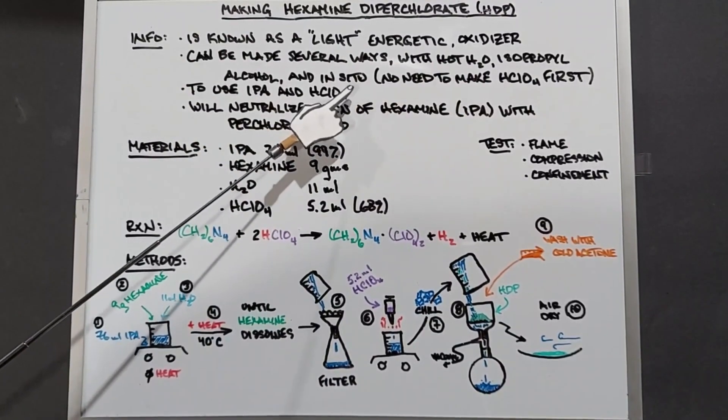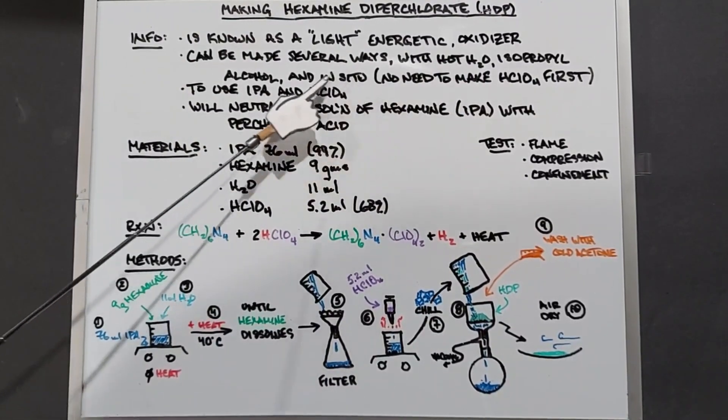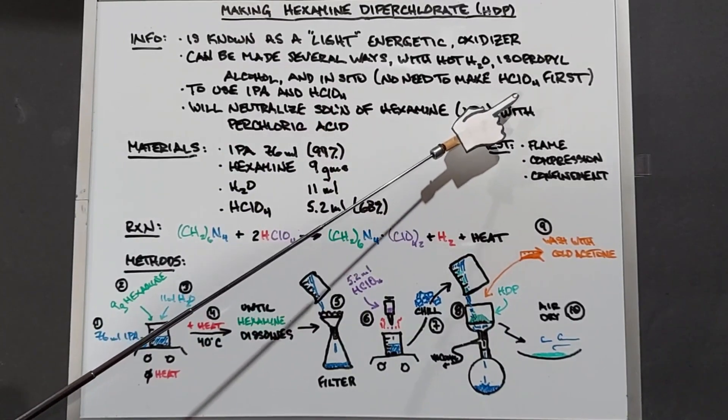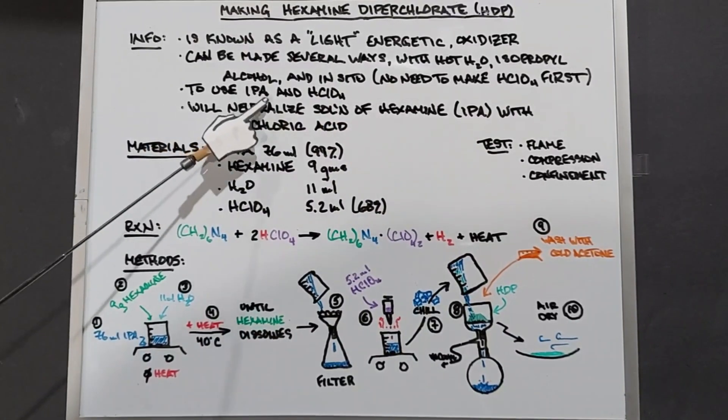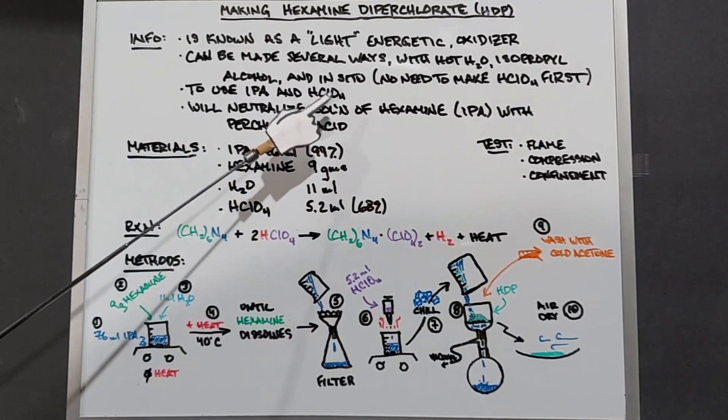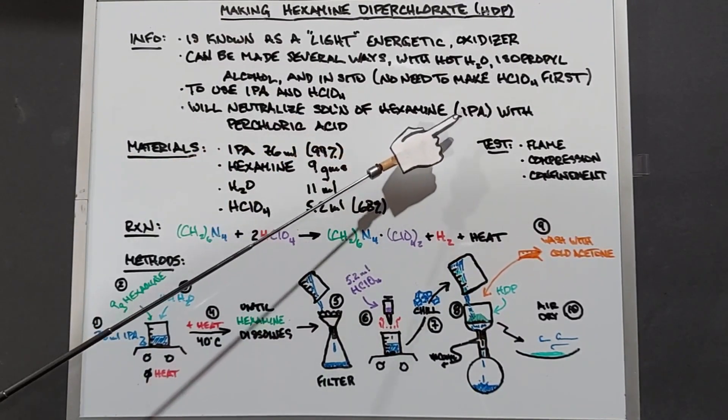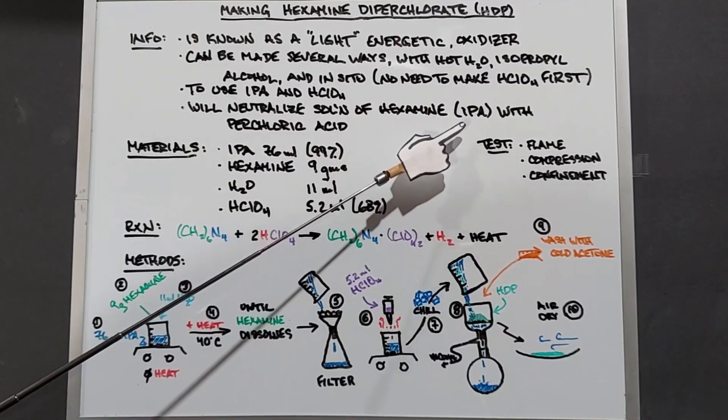What it means by in situ is that we do not need to make the perchloric acid first. This video I'm going to be using isopropyl alcohol IPA and the perchloric acid, and what we'll be doing is neutralizing a solution of hexamine with the perchloric acid.